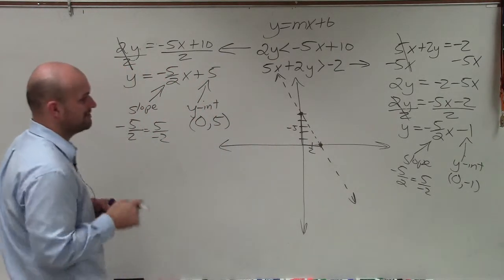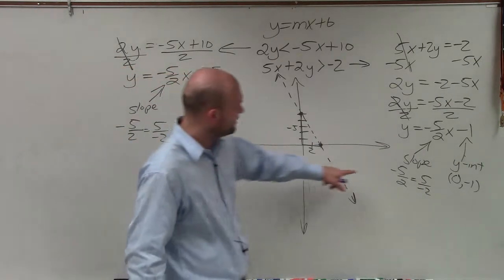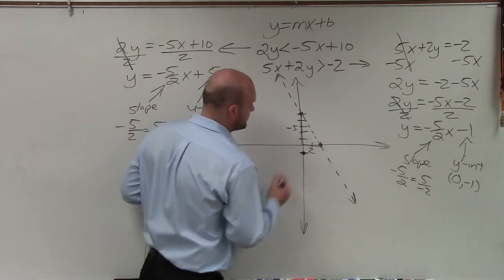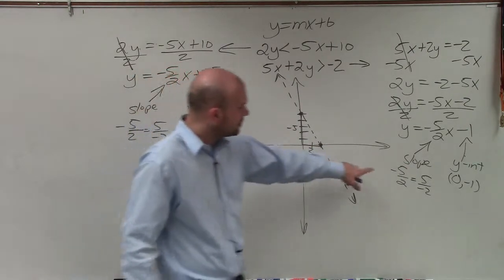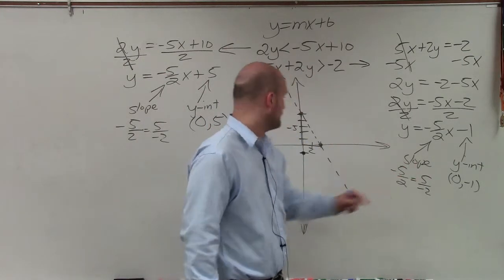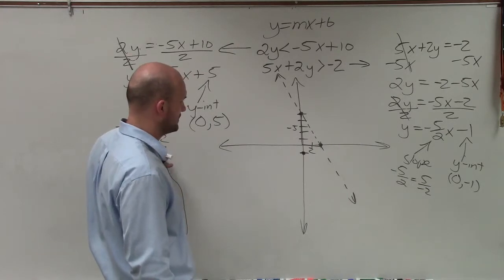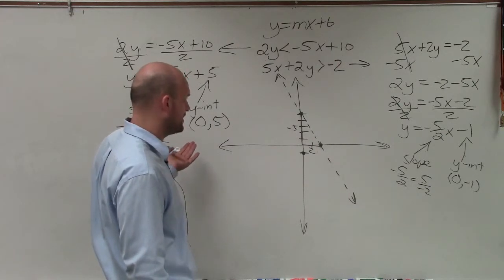Now let's go ahead and graph the other one. Now this one has a slope or a y-intercept at negative 1. So I'm going to go down to negative 1 and make my point. Now this slope is 5 over negative 2, which is very similar to this one. Oh, yeah. So OK.